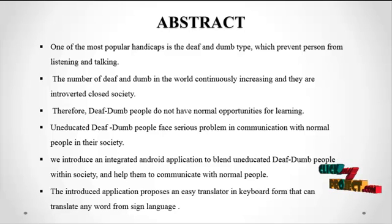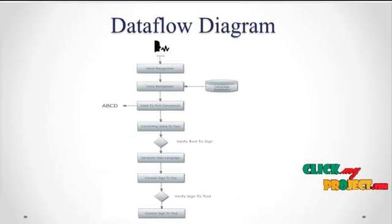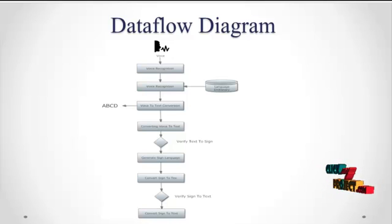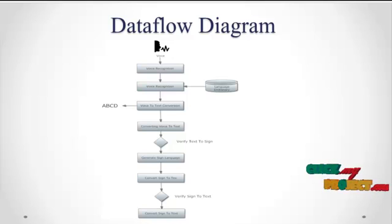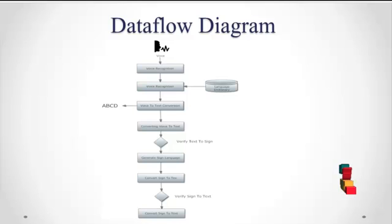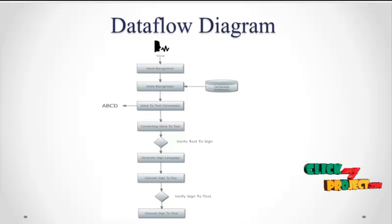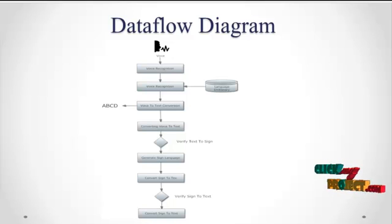Let's see our data flow diagram. Here, we input voice to the smartphone device. After inputting the voice, it enters the voice recognition module. The voice recognition module contains a language dictionary, and using that dictionary, the voice is converted into text — each voice input is converted as a text English alphabet.